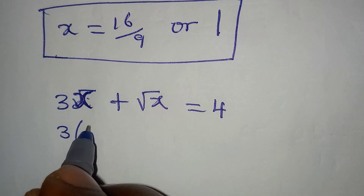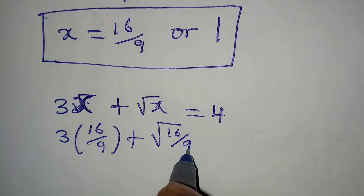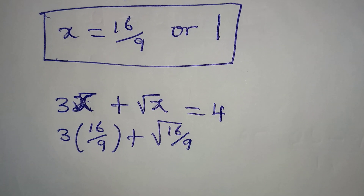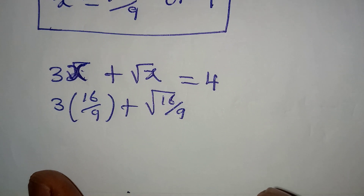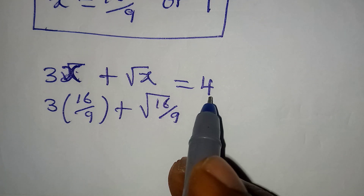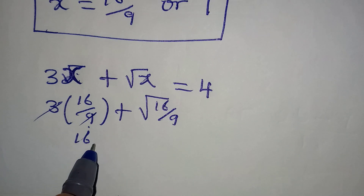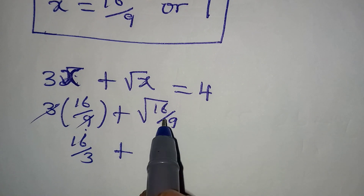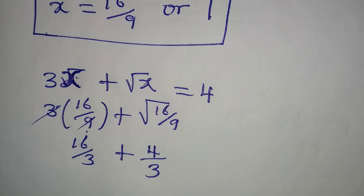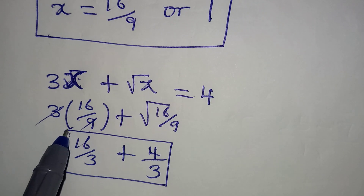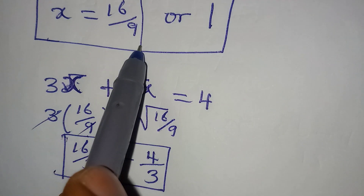If I put in 16 over 9, I have 3 multiplied by 16 over 9 plus square root of 16 over 9. This is not going to give 4, because 3 times 16 over 9 gives 16 over 3, and square root of 16 over 9 gives 4 over 3. These cannot be added to give 4, so x equals 16 over 9 does not satisfy the equation.